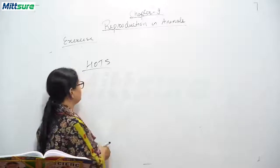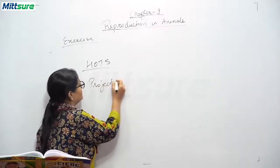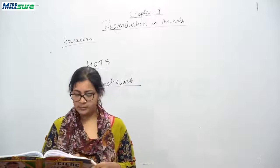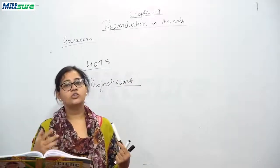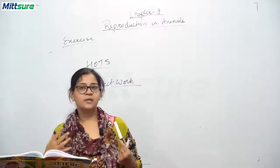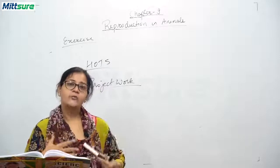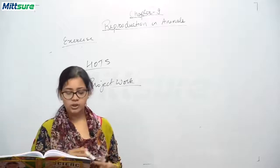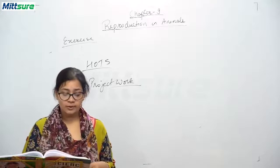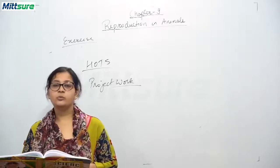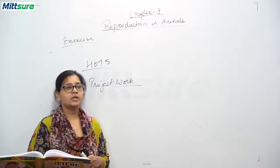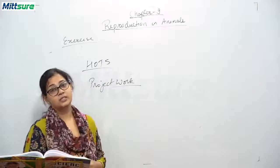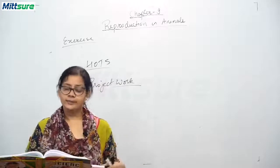Now we will be discussing the project work. There are two projects. First, make a project or poster showing how a single cell becomes a big individual — explain and illustrate how human fertilization takes place. Second, collect information about some animals which have an asexual mode of reproduction, such as paramecium or algae, and give a brief idea of how asexual reproduction occurs in these animals.